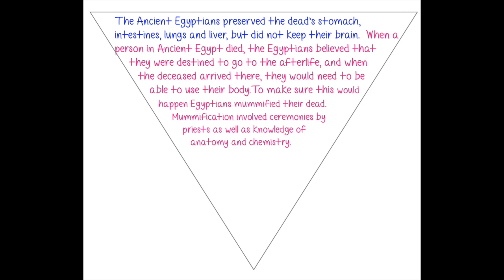In pink, I wrote: 'When a person in ancient Egypt died, the Egyptians believed that they were destined to go to the afterlife, and when the deceased arrived there, they would need to be able to use their body.' That connects the body parts to my topic — mummification and the afterlife. Then I continue with background information: 'To make sure that this would happen, the Egyptians mummified their dead.' My first paragraph is about mummification, so that makes sense. Then: 'Mummification involves ceremonies by priests, as well as knowledge of anatomy and chemistry.' My next paragraph is about ceremonies, and the following one is about science — that's why I put the sentences in that order.